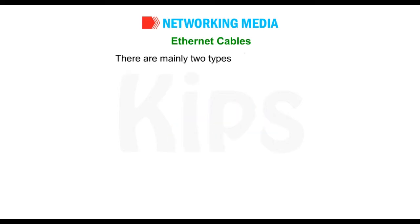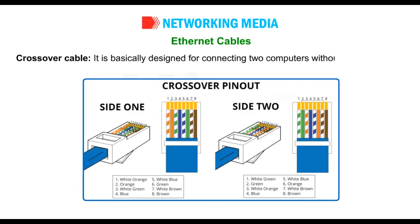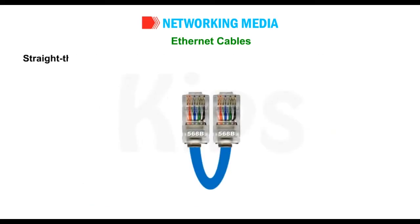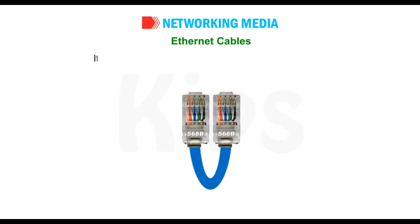There are mainly two types of Ethernet cable. Crossover cable: it is basically designed for connecting two computers without a hub or router. Straight-through cable: this type of cable has both its ends identical to each other and is used to connect a computer to a router or a switch.